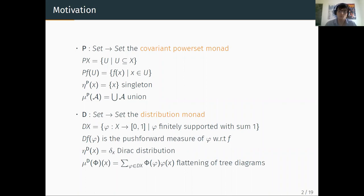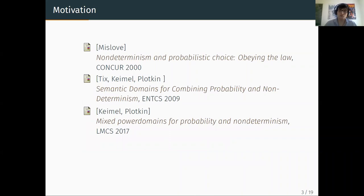The other monad I want to consider is the finitely supported probability distribution monad, D. On a function, it takes pushforward measures. The unit is given by Dirac distributions and the multiplication can be seen as flattening two levels of a tree diagram into one.